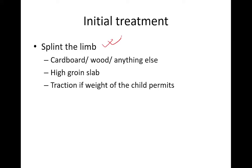The initial treatment involves splinting of the limb. In the field, if a hospital is not nearby, a cardboard, wood plank, or rolled-up newspapers and cartons can be used as a splint. In the hospital, a high groin slab may be applied, and traction — either skeletal or skin traction — can be used if the child is of appropriate weight.